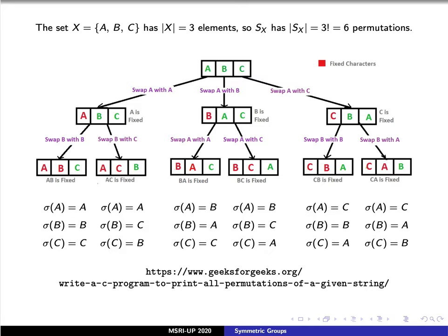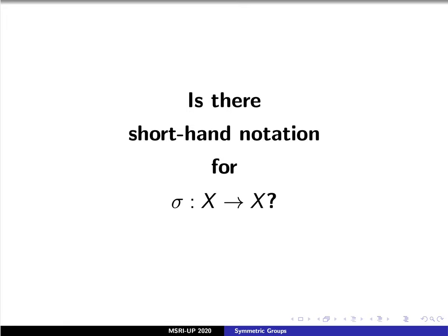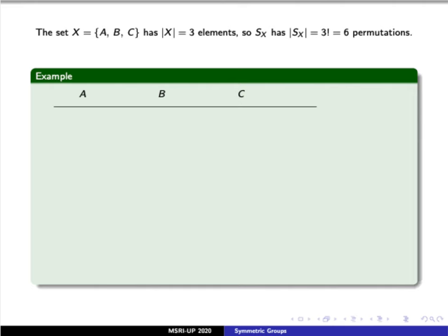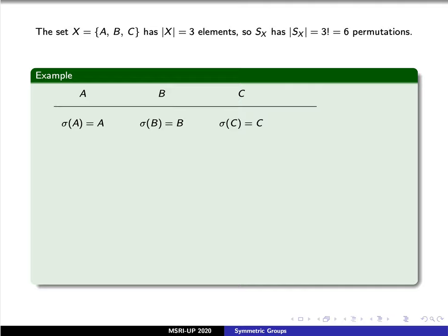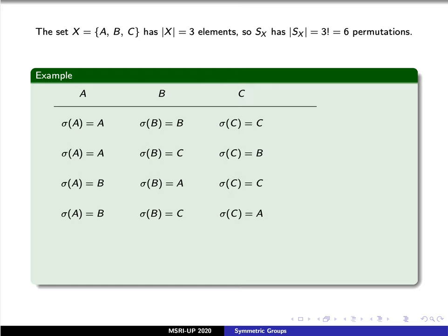This is cumbersome to write out every single time we want to discuss a permutation, so is there shorthand notation we could use? Let's go back and take a look at that example again. The first permutation left a, b, and c invariant. The second interchanged b and c. The third interchanged a and b. The fourth swapped around a, b, and c in a cyclical pattern. The fifth left b invariant but swapped a and c. And the sixth moved around a, b, and c in a cyclical pattern.